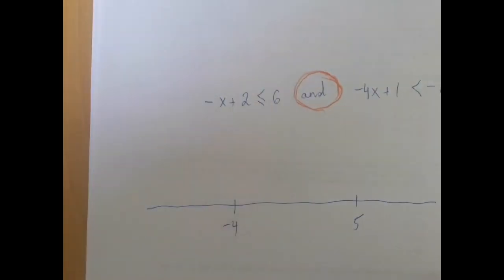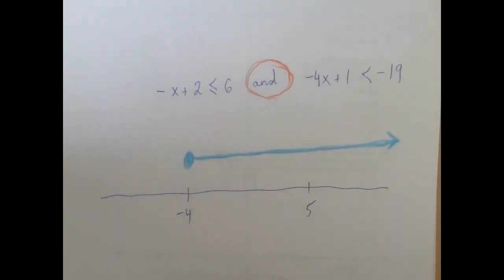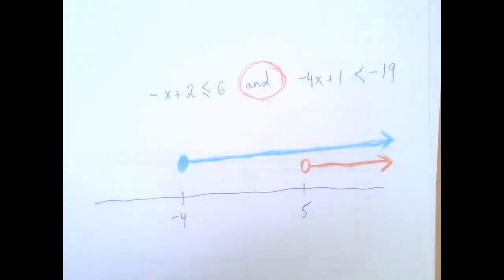One of them, X is greater than or equal to negative 4. Looks like that. And the other one is strictly greater than 5.